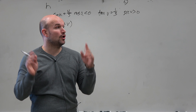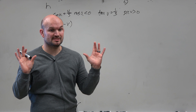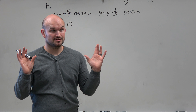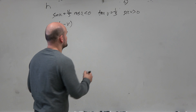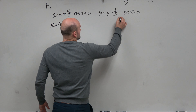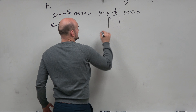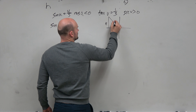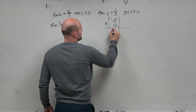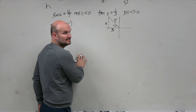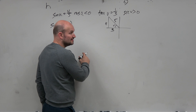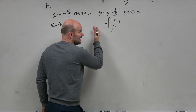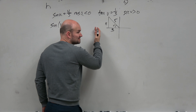Yes. But again, we have a constraint, so that tells us that the orientation matters. So not only is sine a positive value, but cosine is a negative value. The cosine of u is negative. So which quadrant is sine positive but cosine is negative?